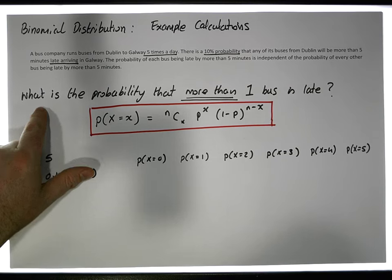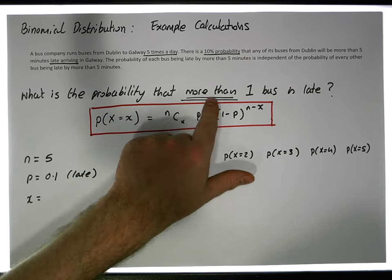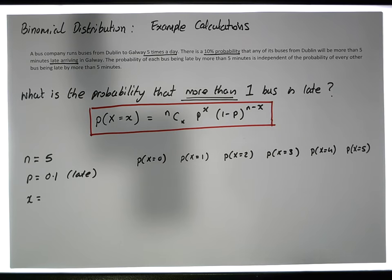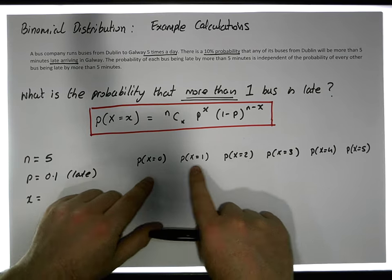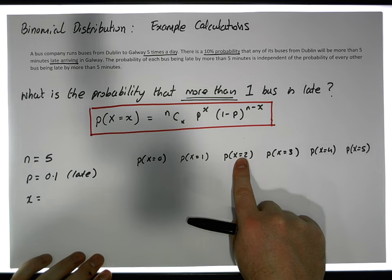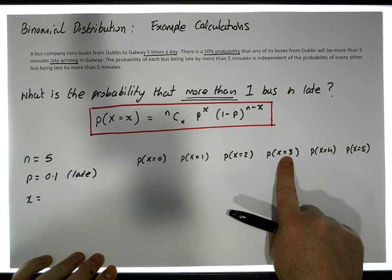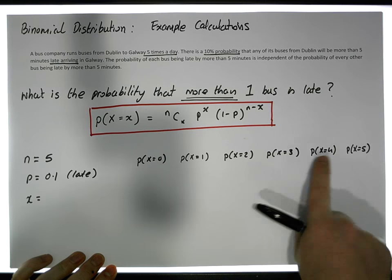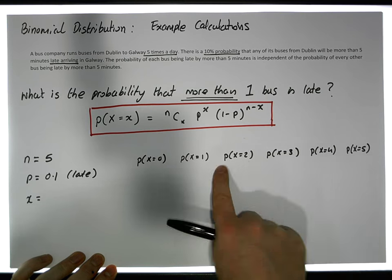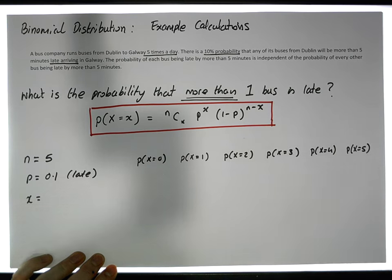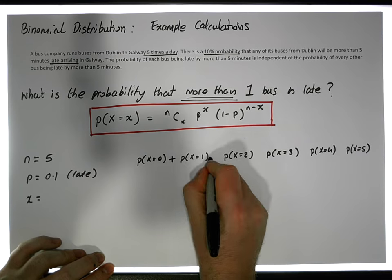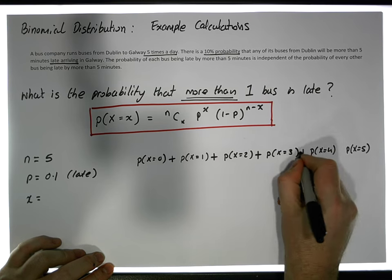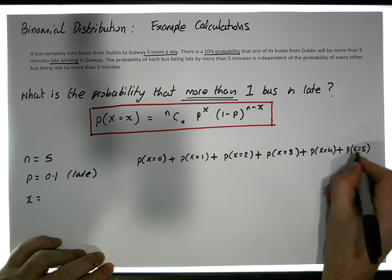But we're interested in the probability that more than one bus is late. 'More than one' means: two could be late — that's more than one — but it could also mean three are late, four are late, or five are late. So we're actually interested in this particular range of probabilities.